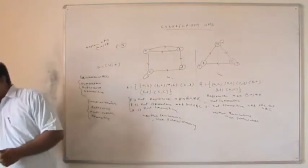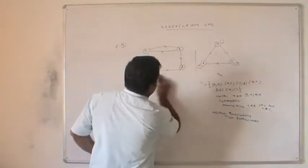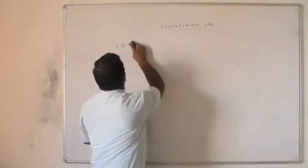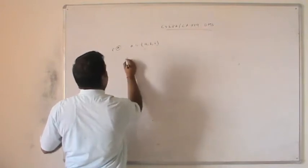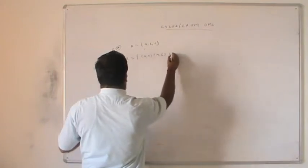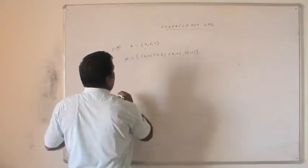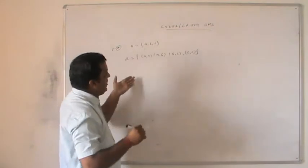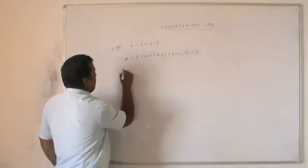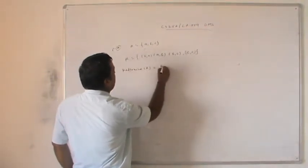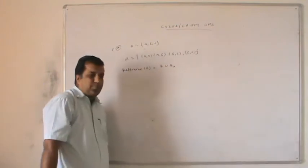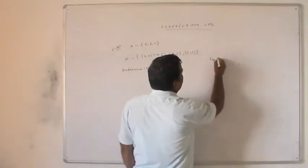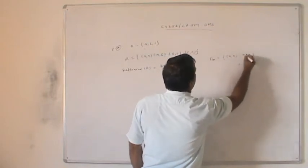Problem 4: Given set A = {a, b, c} and relation R = {(a,a), (a,b), (b,c), (c,c)}, find the reflexive, symmetric, and transitive closures. Reflexive closure = R ∪ Δ_A, where Δ_A = {(a,a), (b,b), (c,c)}. Since (b,b) is missing from R, we add it. So the reflexive closure = {(a,a), (a,b), (b,c), (c,c), (b,b)}.